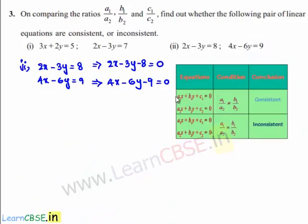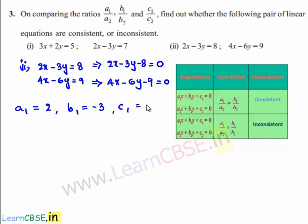By comparing the given set of equations with the standard equations a1x plus b1y plus c1 is equal to 0 and a2x plus b2y plus c2 is equal to 0, we get the values of a1 as 2, b1 as minus 3, c1 as minus 8. Similarly, a2 is equal to 4, b2 is equal to minus 6, and c2 is equal to minus 9.